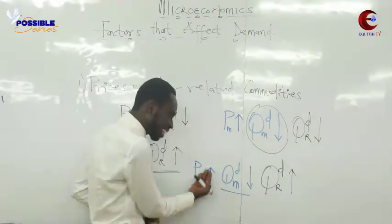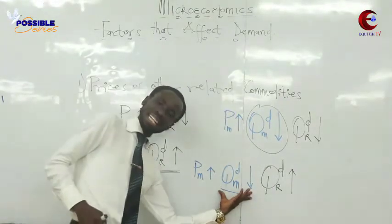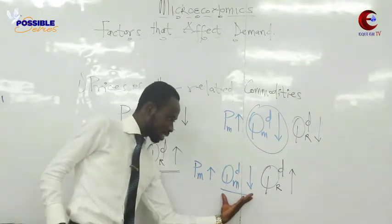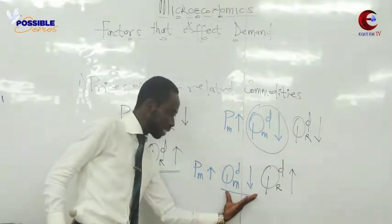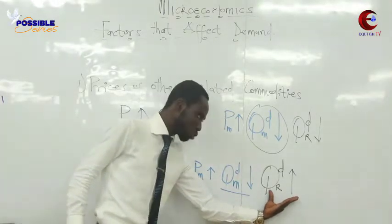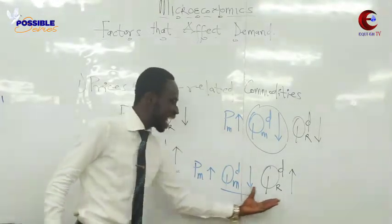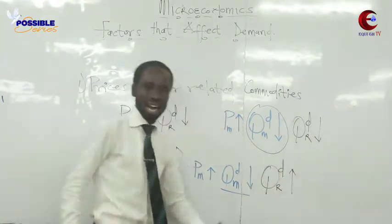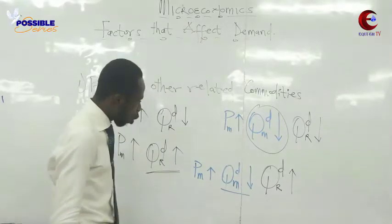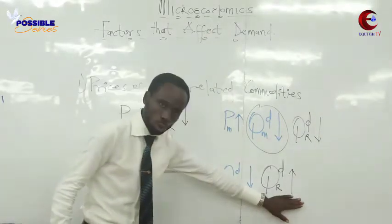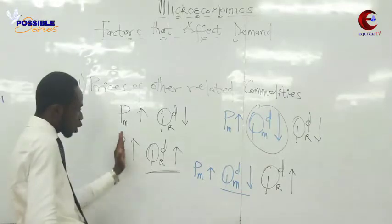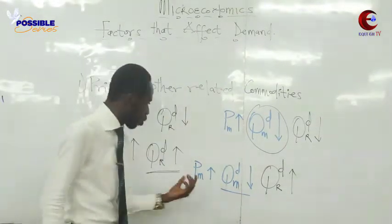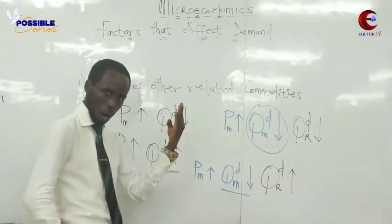Because when the price increases for Milo, consumers have left Milo and are now consuming Richoku. Consumers have left Milo and are consuming Richoku. So we say that they are substitutes — they are substituting each other. When the price of one goes up, the quantity of the other commodity also goes up.